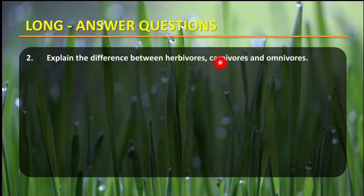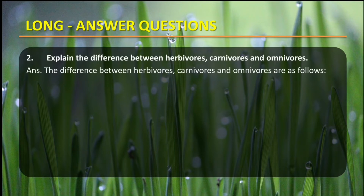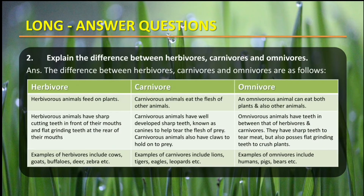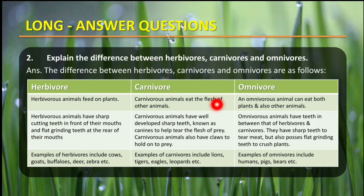Second question: Explain the difference between herbivores, carnivores, and omnivores. Herbivore animals feed on plants, while carnivore animals eat the flesh of other animals, and omnivore animals can eat both plants as well as other animals. Herbivore animals have sharp cutting teeth in front of their mouth and flat grinding teeth at the rear of their mouth.